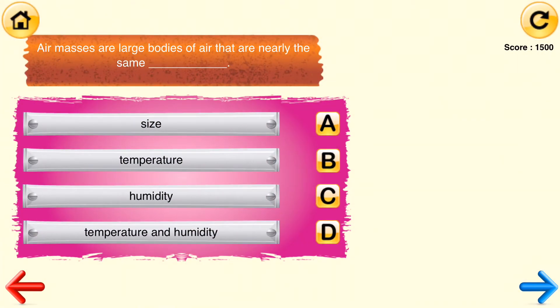Air masses are large bodies of air that are nearly the same blank. Size. Temperature. Humidity. Temperature and humidity.